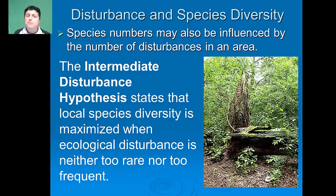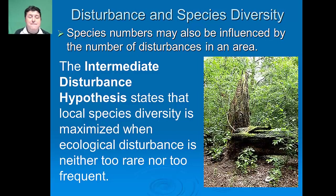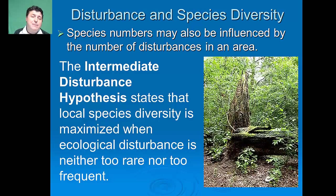Species numbers may also be influenced by the number of disturbances in an area. In an ecosystem there are many things that can be a disturbance, from a fire to a flood. The intermediate disturbance hypothesis states that local species diversity is going to be maximized when ecological disturbance is neither too rare nor too frequent.